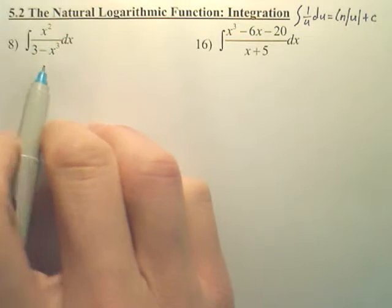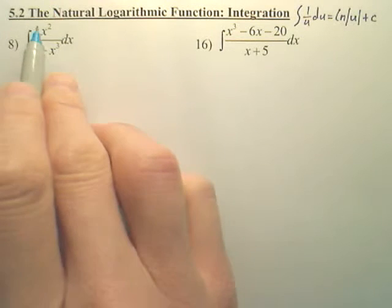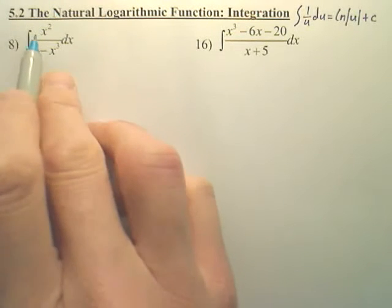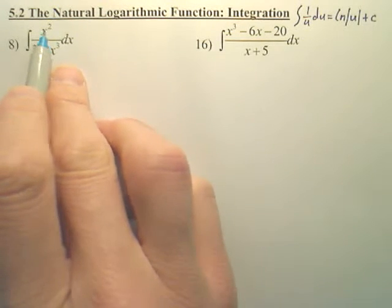Number eight, we're going to integrate this, and the best guess is u-substitution. Choosing which one to u-substitute, probably the bottom one, because when you derive this, you'll get the top, or a variance of the top.